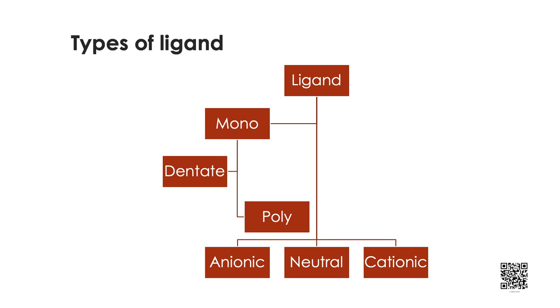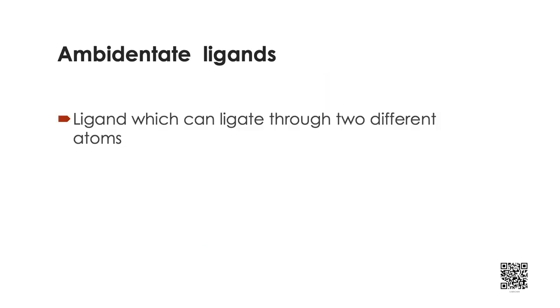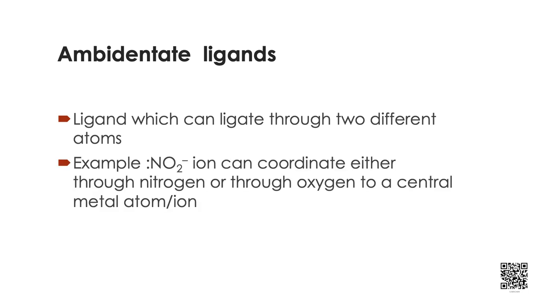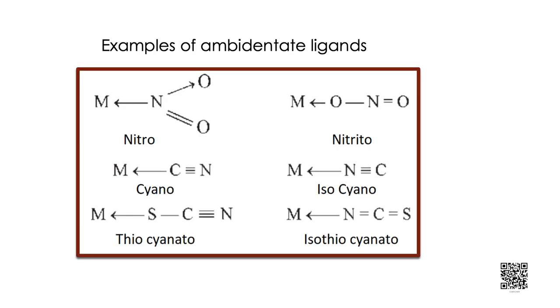Chelate complexes tend to be more stable than similar complexes containing unidentate ligands. Ligands can also be classified as neutral, anionic or cationic on the basis of the charge they carry. Ligands which can ligate through two different atoms are called ambidentate ligands. Examples of such ligands are nitrite and thiocyanate ions. Nitrite ion can coordinate either through nitrogen or through oxygen to a central metal atom or ion. Similarly, thiocyanate ion can coordinate through the sulphur or the nitrogen atom.